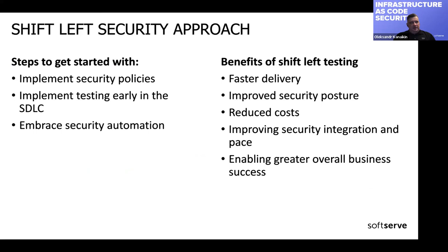The shift-left security approach is about adding security checks and tests early in our pipelines and software development life cycle. We may want to implement security policies — first defining the security policies we want to use, then implementing our testing tools early in the SDLC from the beginning, so issues fail early and never reach production. We should also embrace security automation so our checks are iteratively applied to pipelines.